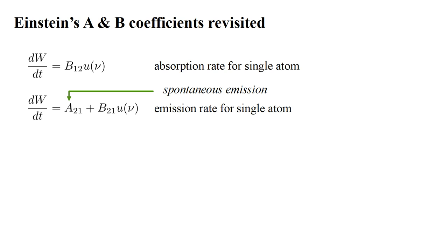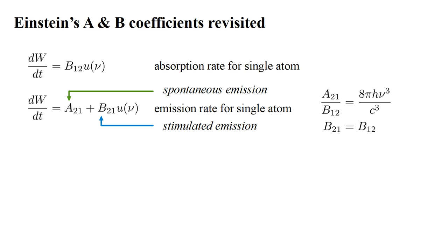The first term describes spontaneous emission. We showed that the second term, which represents stimulated emission, must be included if the absorption and emission processes are consistent with Planck's law for radiation density. We found that the ratio of A-two-one to B-one-two is eight-pi h-nu cubed over c-cubed, and the B coefficients are equal.